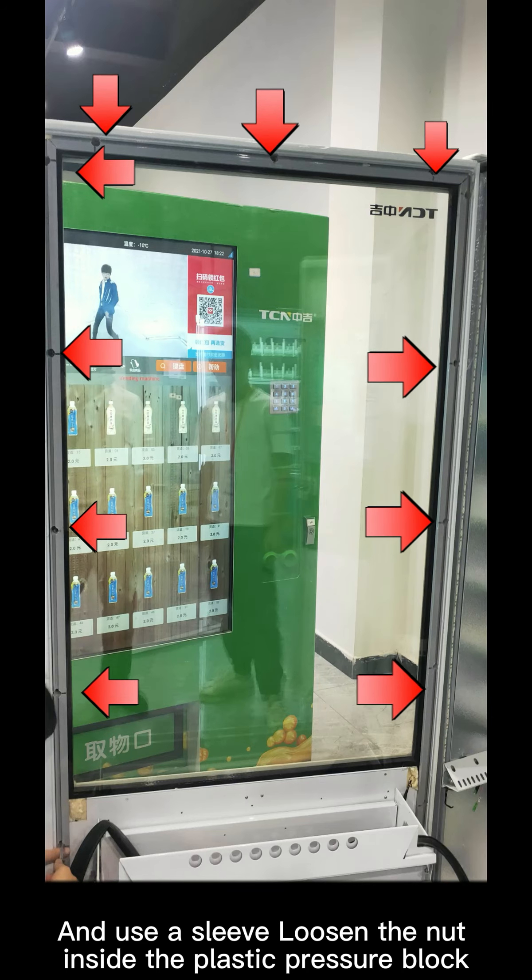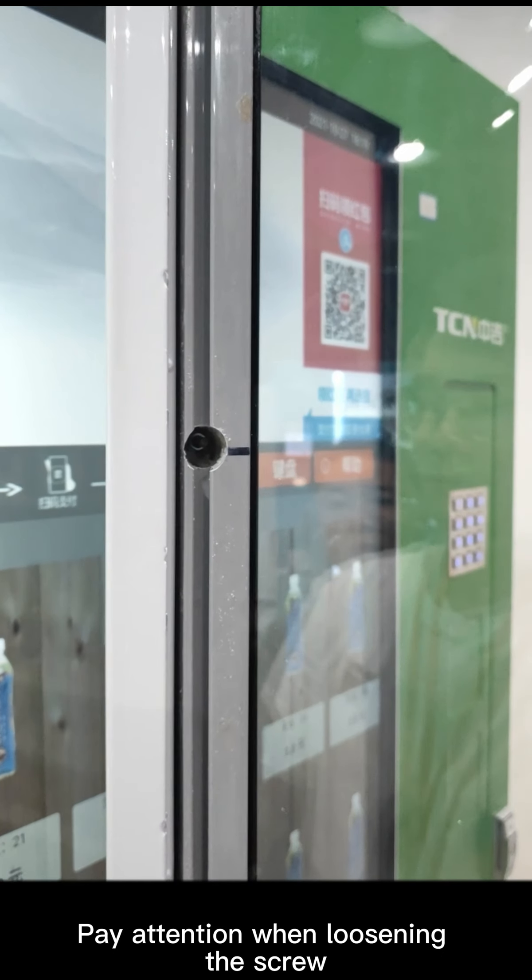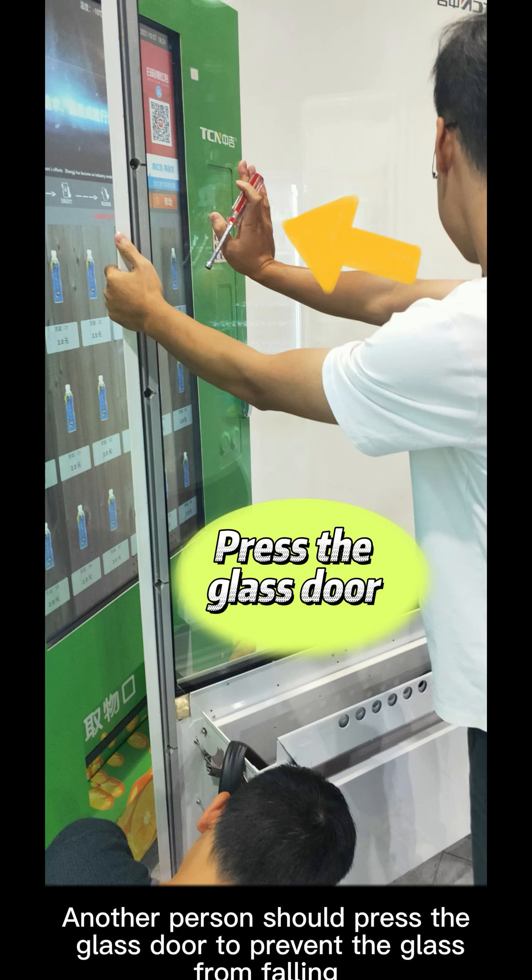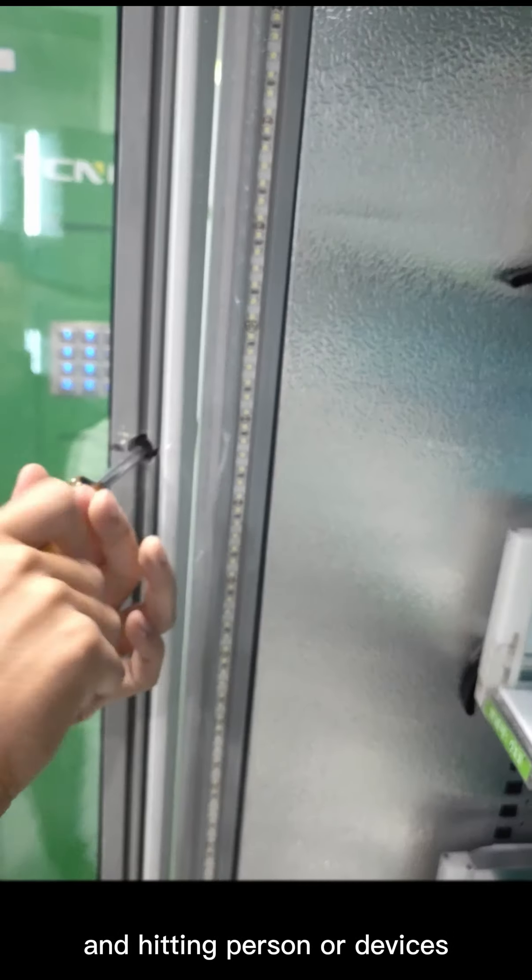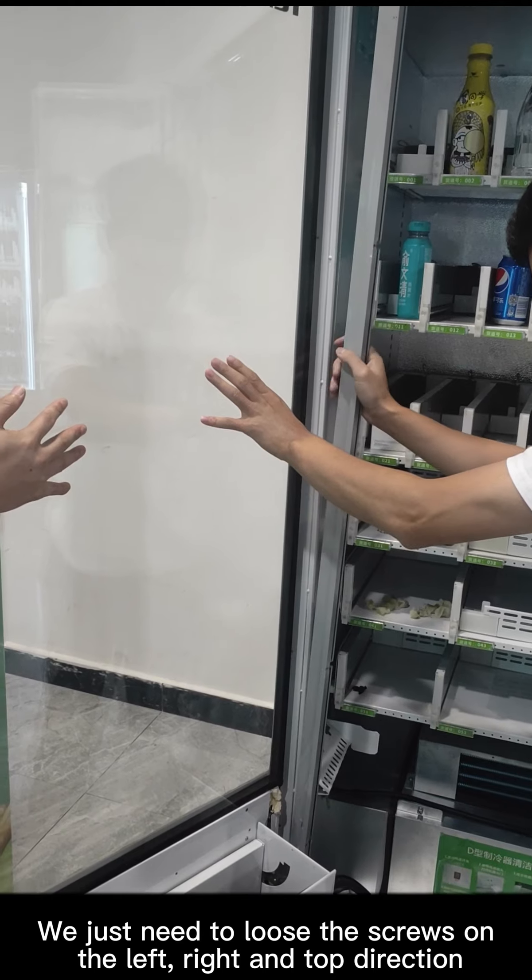Use a sleeve to loosen the nut inside the plastic pressure block. Pay attention when loosening the screw - another person should press the glass door to prevent the glass from falling and hitting a person or devices. We just need to loosen the screws on the left, right, and top direction.